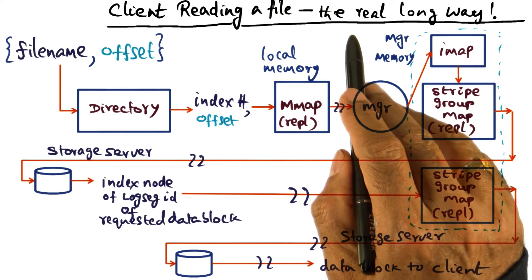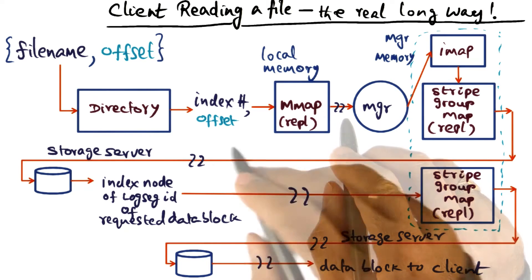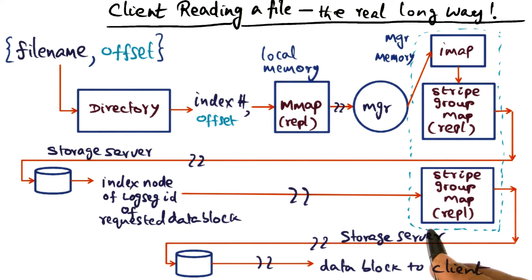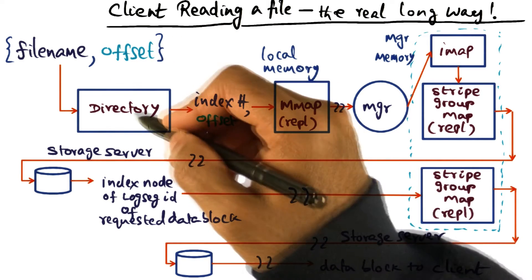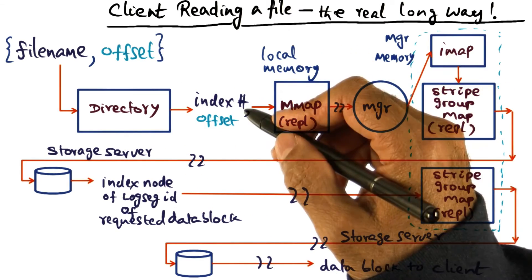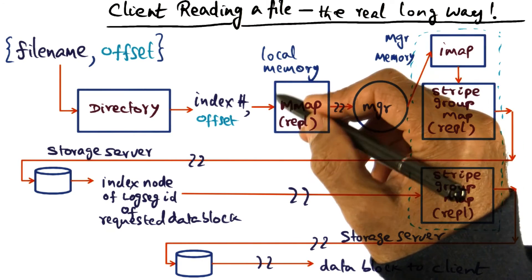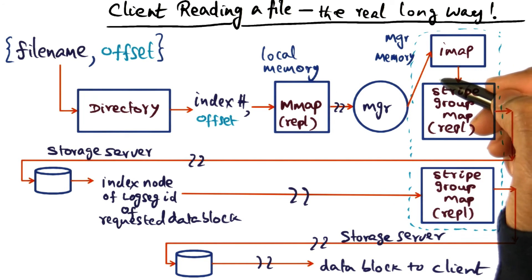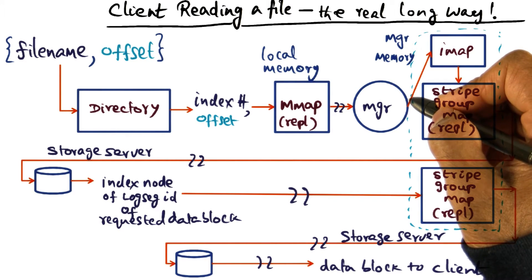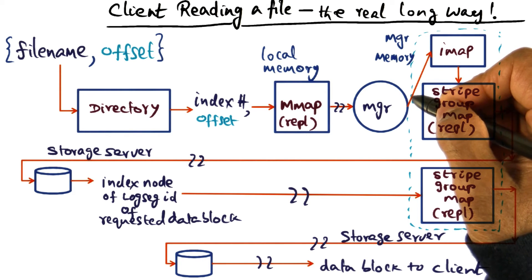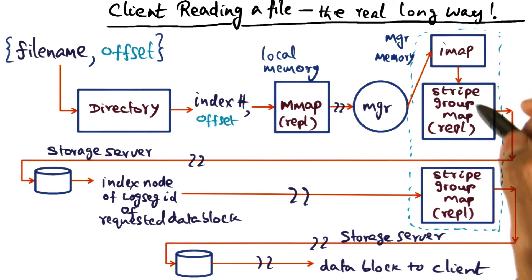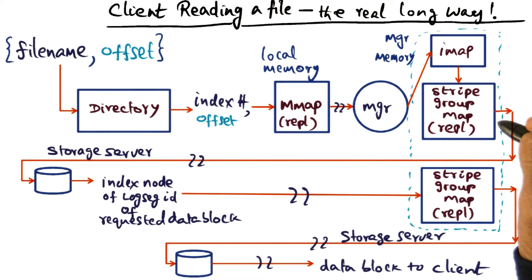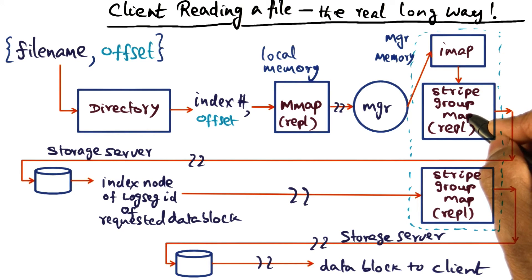There is also the pathologically long way of accessing a particular file. That path uses all of the data structures available at the manager. You start with the file name, look up the directory, get the index number and the offset. It's not in your cache. You go to the manager by looking up the manager map data structure in local memory. The manager looks up its metadata for this file, finds that nobody has it in the cache, so it has to pull it from the disk — which means looking up its IMAP data structure and the stripe group map data structure to find the location of the inode corresponding to the log segment.